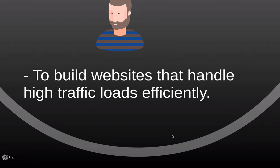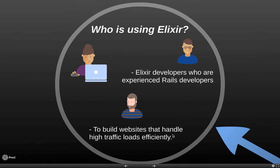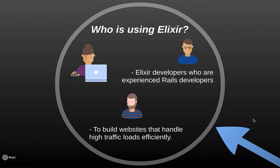Ruby is an object-oriented programming language that encapsulates data and behavior in objects. Elixir is a functional programming language like JavaScript that strings together functions in a series of steps instead of using objects. So there's a difference in approach. Some developers like the fresh approach and the modular application design of Elixir.